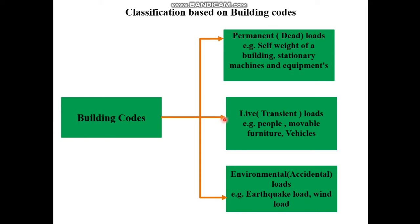The next classification is live or transient loads. This load intensity is varied with time. Examples: people's load, movable furniture, or vehicles.